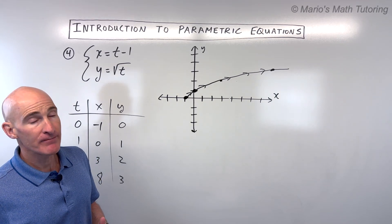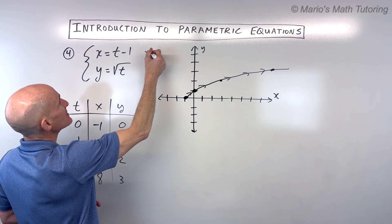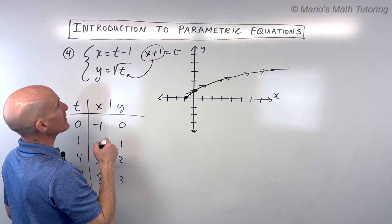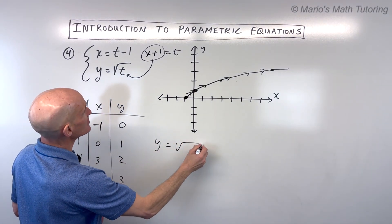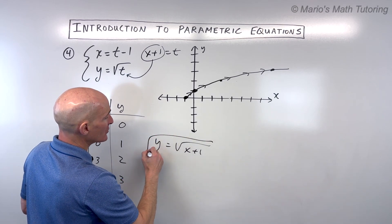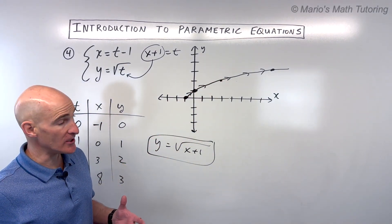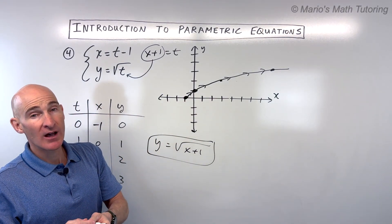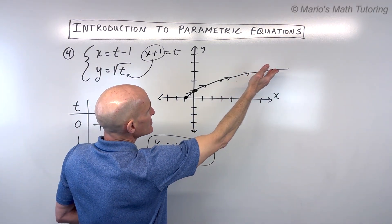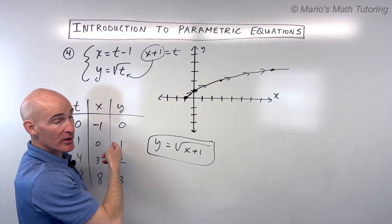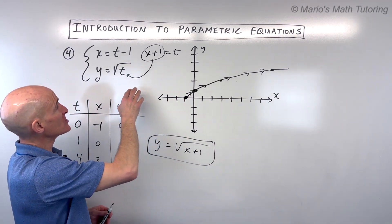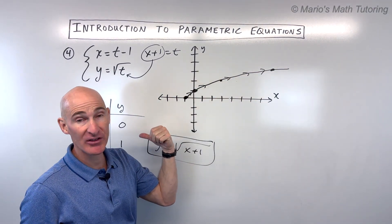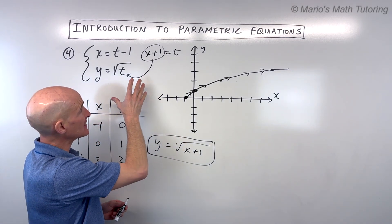Sometimes students mistakenly draw this like a line continuing to the left. But remember, we had restrictions on t that didn't allow us to take the square root of negative values. So this graph just starts at that point and goes in one direction only. It's important to recognize any restrictions on t.